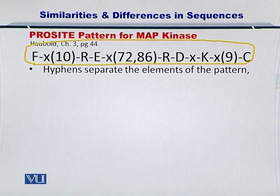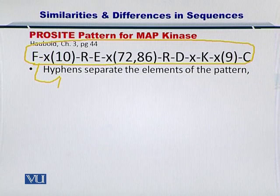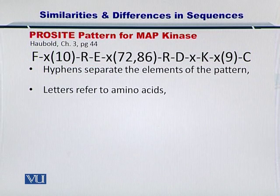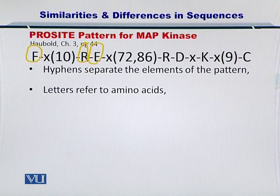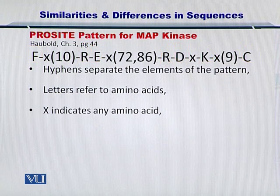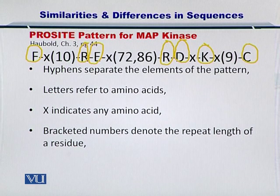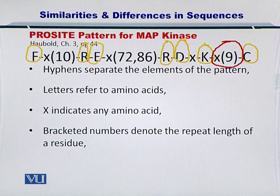The hyphens in the pattern separate the elements, so all the hyphens are essentially separating amino acids from each other. The letters refer to the amino acids — for example, R, D, K, and C. X indicates any amino acid from the 20 different amino acids, and the bracketed numbers denote the repeat length. As you can see, X can be repeated nine times, meaning any amino acid occurring nine times.